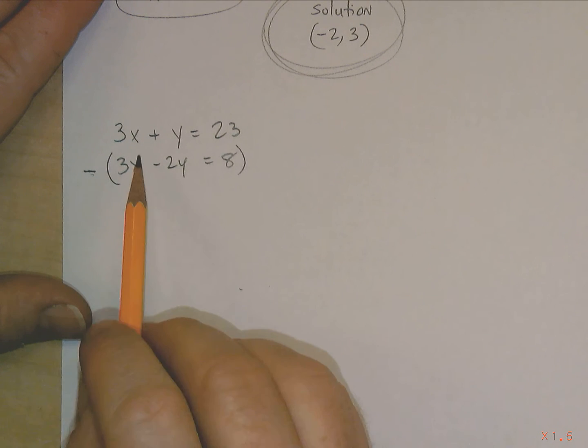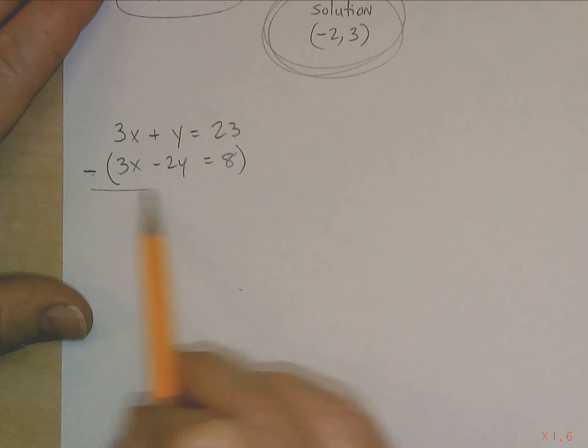So what you could do is you could just simply do it this way. You could say 3x minus 3x is 0, y minus negative 2y. You see how I said that? y minus negative 2y. Those two negatives, those two minuses, counter each other. It's like a negative times a negative, it's a positive. So it's basically y plus 2y, it's 3y. And then 23 minus 8 is 15.